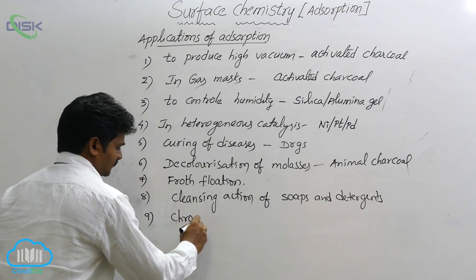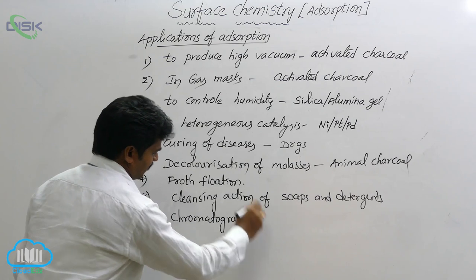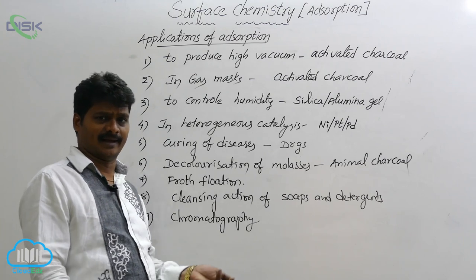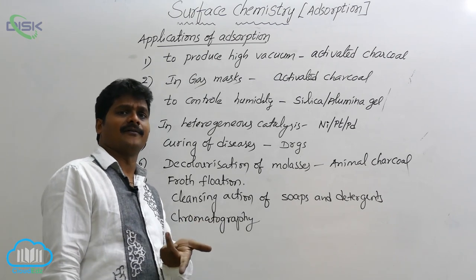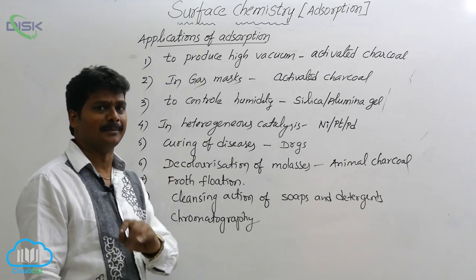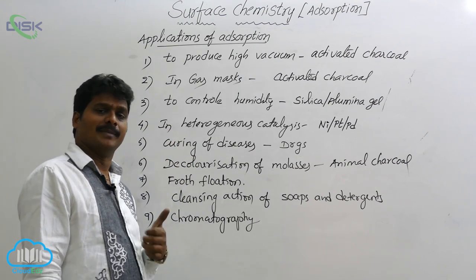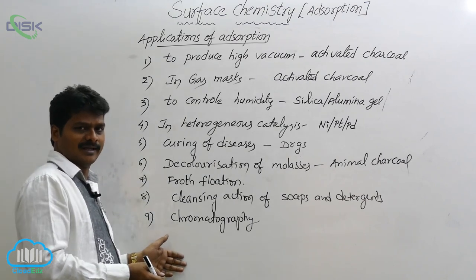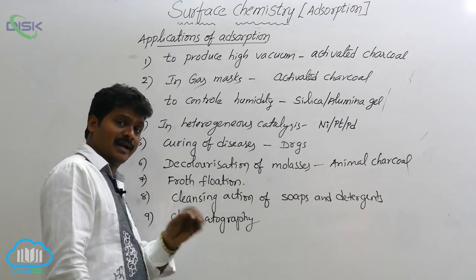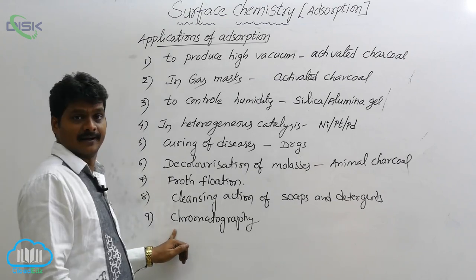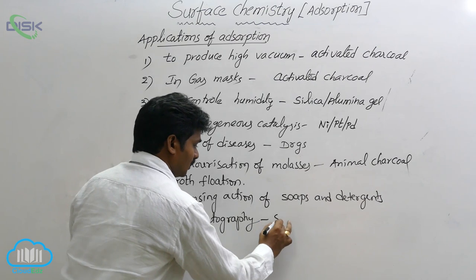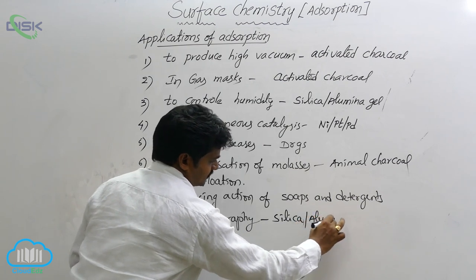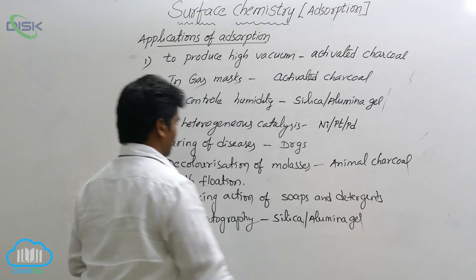The ninth application is chromatography. Chromatography involves the separation and detection of different compounds present in a mixture. We may use adsorption chromatography or partition chromatography. In adsorption chromatography, the components of a mixture are separated based on the extent of adsorption; silica gel or alumina gel is used as the adsorbent.